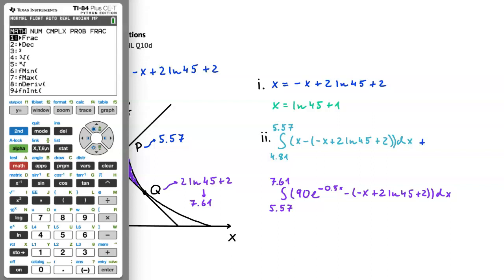We'll start by pressing Math, and then choosing number 9, which gives us a definite integral. We'll start by entering the limits of integration for our first integral, so 4.81 and 5.57. Then we'll enter what we see inside the integral. Note that we already have a set of brackets here, so I will start with x minus brackets negative x plus 2 ln 45.